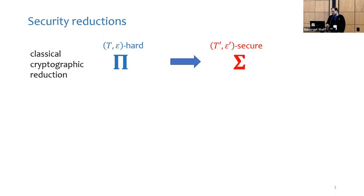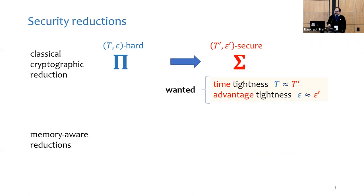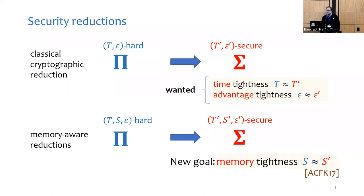Security guarantees are generally quantified with the maximum possible advantage achieved by any attacker running in a specified amount of time. For a security reduction to be meaningful, we want it to be time- and advantage-tight, meaning that we want the guarantees for problem π and scheme σ to be as closely related as possible. In the context of memory-aware reductions, we additionally take into account an adversary's memory, which allows us to analogously define memory tightness.